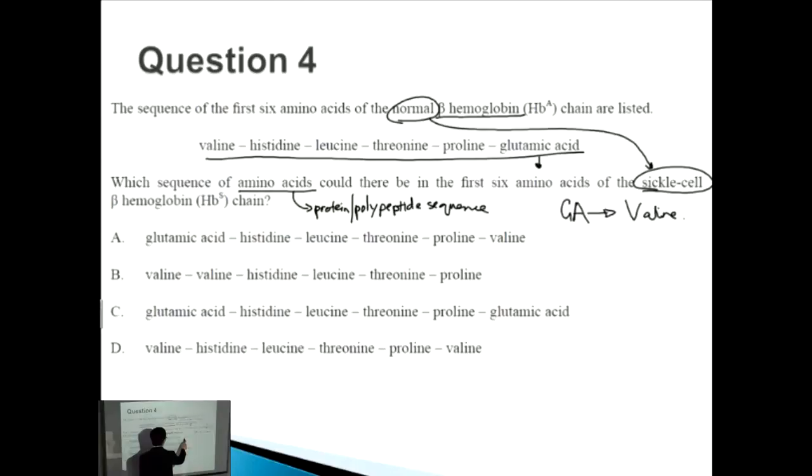Let's look for the ones that have valine at the very end. Answer A as well as D, so we can get rid of B and C. If we look at the rest of the amino acids, the remaining amino acids should be exactly the same: valine, histidine, leucine, threonine, and proline. That's D here: valine, histidine, leucine, threonine, and proline, with a final mutant of valine at the very end. So D is the correct answer.